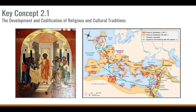The last new belief system we see develop is Christianity, based on the core beliefs and teachings of Jesus of Nazareth — the idea that he was a divine human, the son of God. It drew on Judaic, Roman, and Hellenistic influences. Initially, Christianity faced Roman hostility, but it eventually spread, especially through the efforts of missionaries and merchants, very similar to what we see with Buddhism.